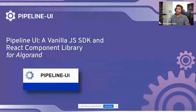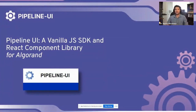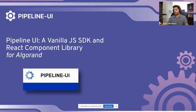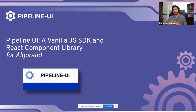So what is Pipeline UI and why exactly are we building this? Pipeline UI is a vanilla JavaScript SDK and a React component library built specifically for the Algorand blockchain. When we were approaching this project, we discovered a really interesting thing in the blockchain space: there are essentially 100,000 developers working across the entire blockchain industry globally, but there are about 20 million developers worldwide. So the real question is, what is the most effective way to onboard and on-ramp new developers into the blockchain space? What we believe we've created is a really seamless, integrated way to make that transition as easy as possible.